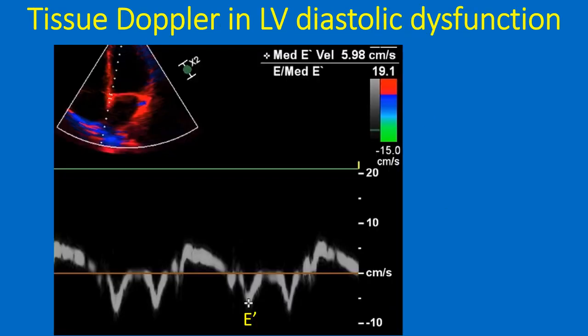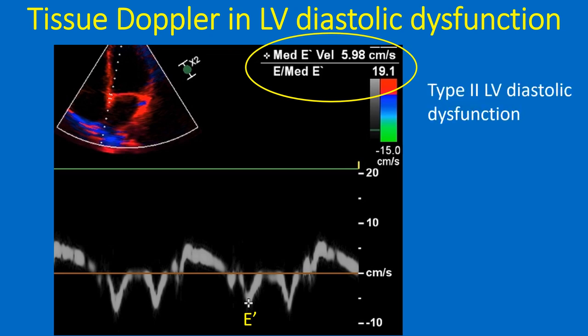Tissue Doppler imaging with colour kinesis is shown in the inset. The E-by-E prime of the medial mitral annulus is shown as 19.1, indicating type 2 left ventricular diastolic dysfunction. In diastolic dysfunction, as the relaxation of the ventricle is impaired, the velocity of the medial mitral annulus is reduced so that the E-by-E prime ratio is increased. The E-wave is measured prior to tissue Doppler imaging and stored so that the software displays the E-by-E prime ratio as soon as E prime is measured.